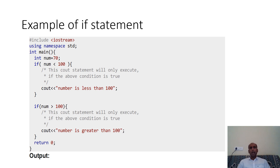Let's take an example. I'm storing the value 70 in a variable 'number' and checking: if number is less than 100, then I display 'number is less than 100.' Then I give another condition: if number is greater than 100, display 'number is greater than 100.' The first condition — 70 less than 100 — is true, so the output will be 'number is less than 100.' The second condition — 70 greater than 100 — is false, so that if block will not execute, and then return 0 exits the program.